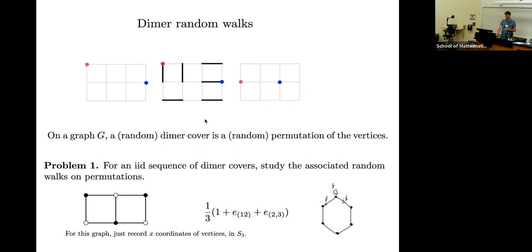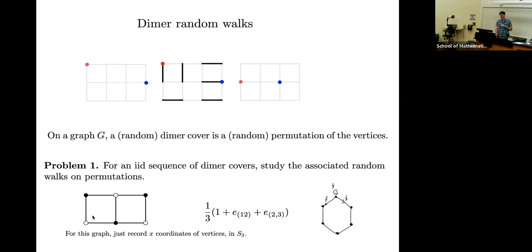And that's the problem — to study that random walk. Why is that an interesting question? Well, before I answer that, let me just give you the example. Here's an example of a very small graph. It's got six vertices. If I just remember the x-coordinates of the vertices, then the random walk projects to that S.